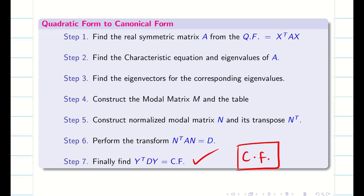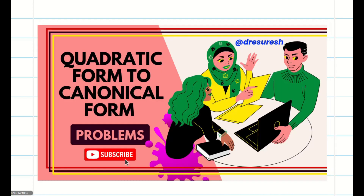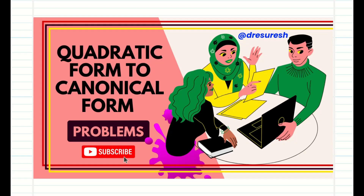Once you find the canonical form, the next step is to find the rank, index, nature and signature. Before seeing this video, if you didn't watch the video on how to reduce the quadratic form into canonical form, first go to the playlist, watch that video which is displayed on the screen, then come back here — it will be much easier for you.